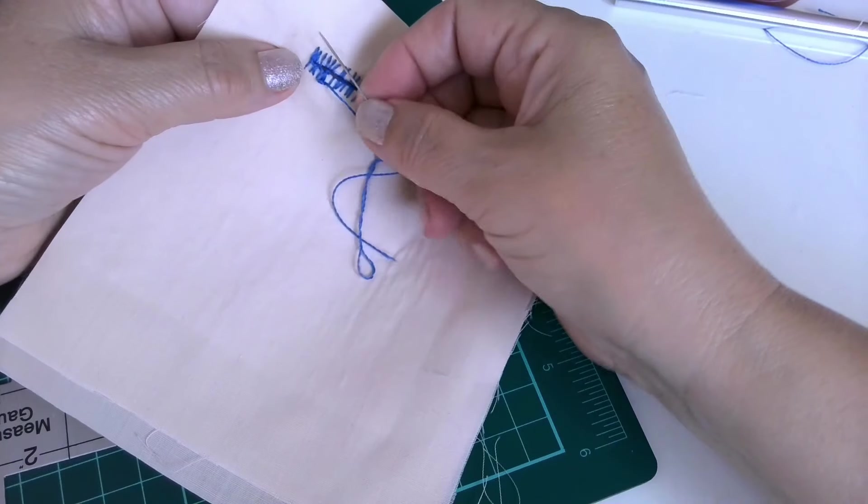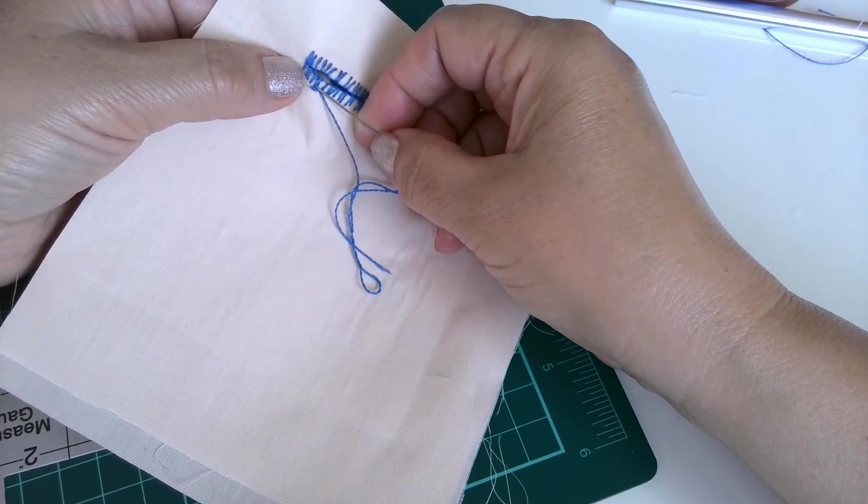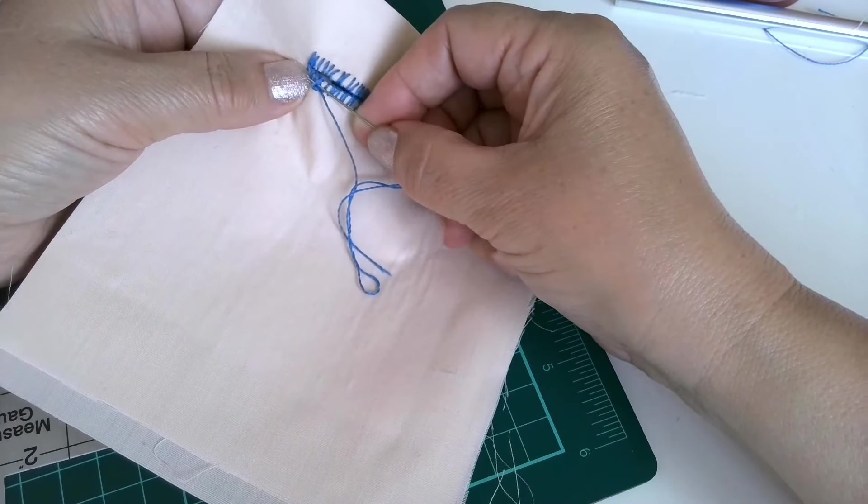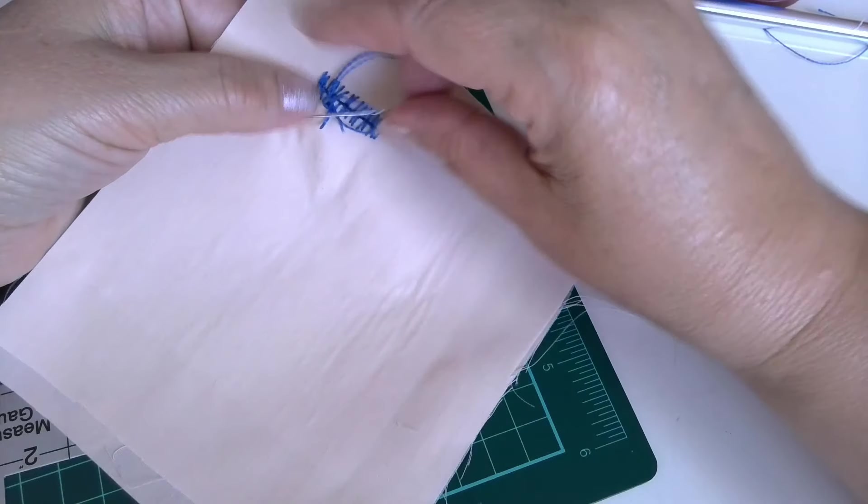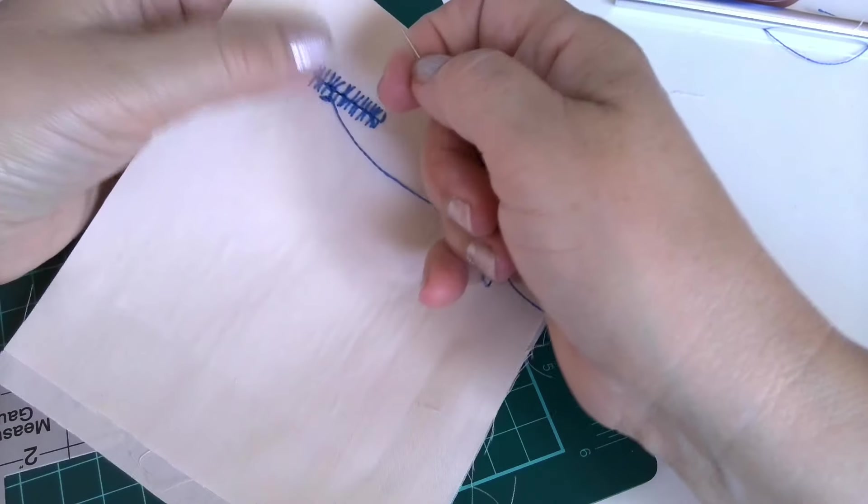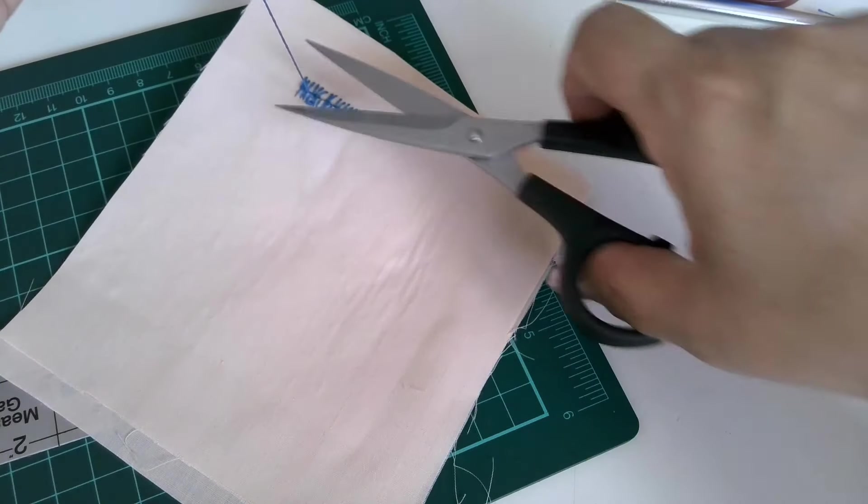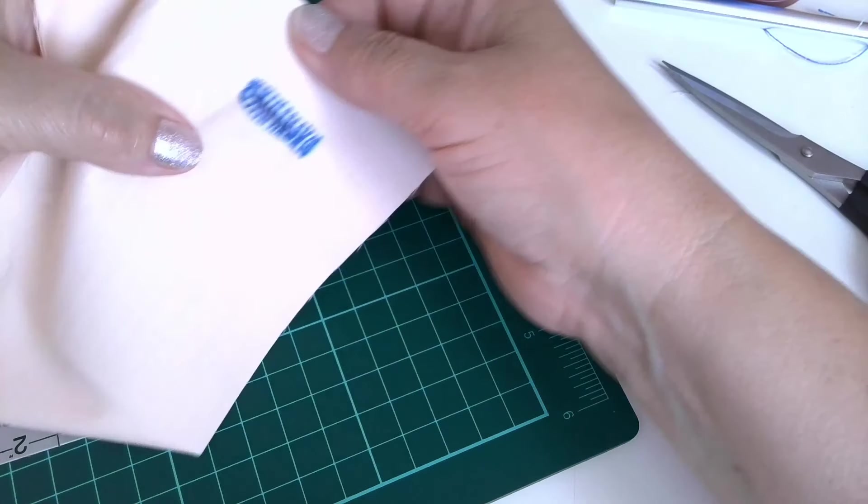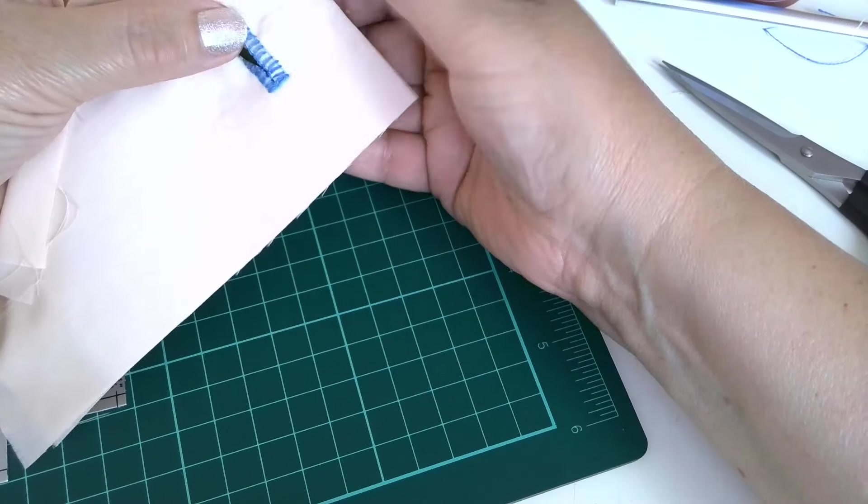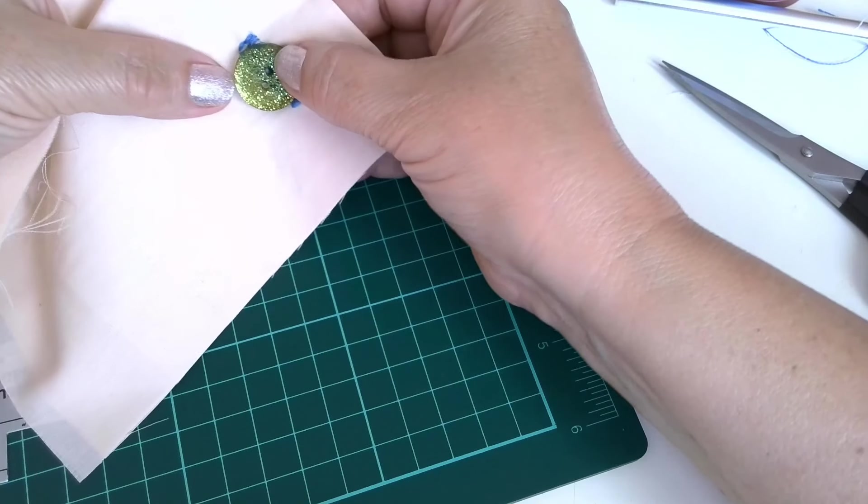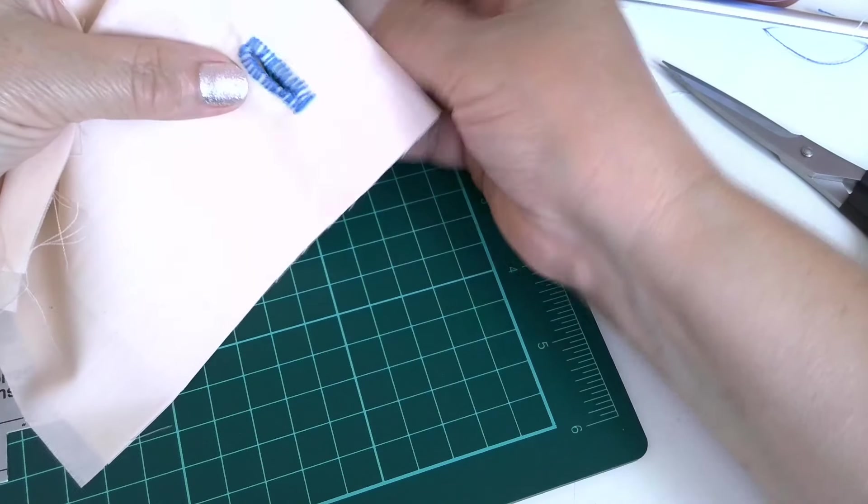Now we go on the wrong side and make a knot to finish the stitch. So, this is the buttonhole. You can check how it fits.